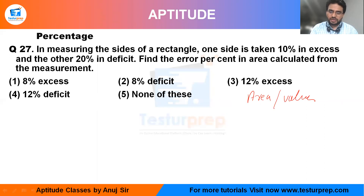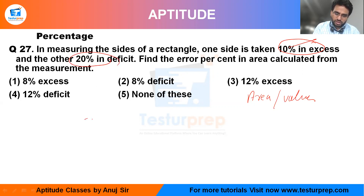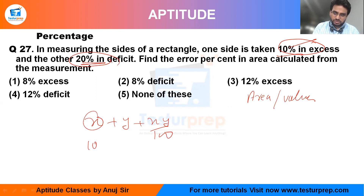First the value is decreased, then increased, and then decreased again. You can use the formula x plus y plus xy divided by 100. Here, there is a 10 percent increment followed by a 20 percent decrement. So we have 10 plus negative 20 plus (10 multiplied by negative 20) divided by 100, where the double zeros cancel out, giving minus 10 minus 2.